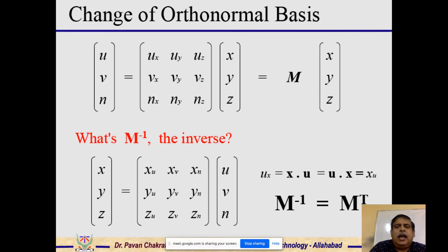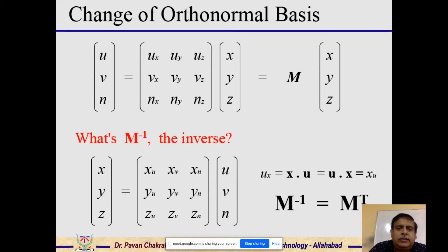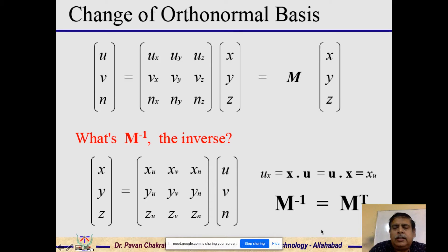The inverse transformation, moving from uvn back to xyz, is M inverse, which equals the transpose of M. The entries of M transpose are x_u = x dot u, x_v = x dot v, and x_n = x dot n. This is analogous to rotation transformations, where the inverse of a rotation matrix is also its transpose.